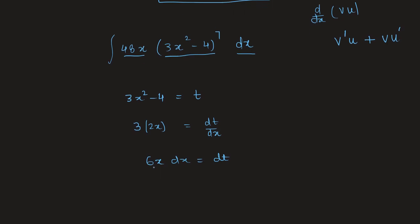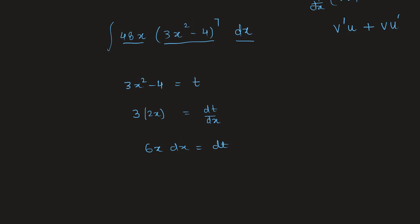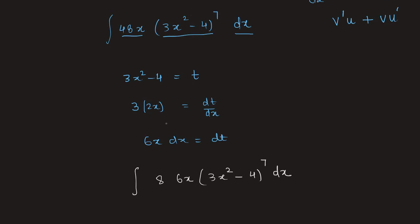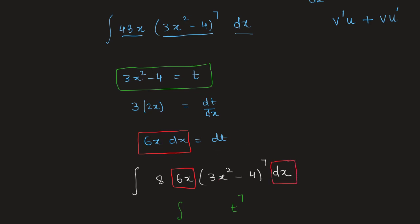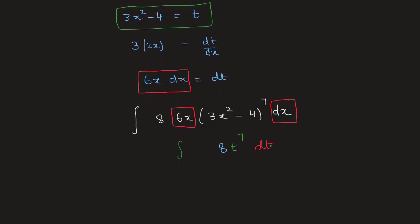Now we rewrite the integral: 48x(3x² - 4)⁷ dx becomes 8 · ∫t⁷ · (6x dx). Since 6x dx = dt, this becomes 8 · ∫t⁷ dt. The constant 8 stays outside.